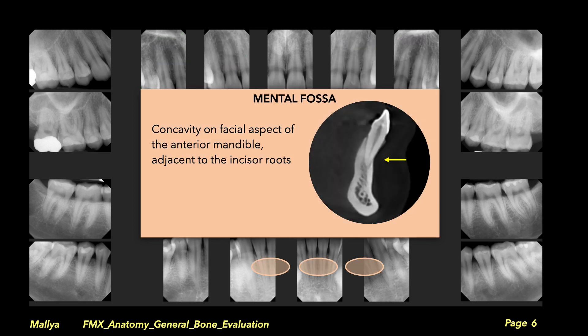A similar phenomenon also occurs in the mandibular anterior region. The buccal bone adjacent to the mandibular incisors is thin, and the mandible is relatively narrower in the region adjacent to the teeth. As a result, this area appears relatively radiolucent on periapical radiographs. Again, the lamina dura and periodontal ligament space surrounding the mandibular incisors is intact, helping you rule out apical periodontal inflammation and establish that this is an anatomic radiolucency.